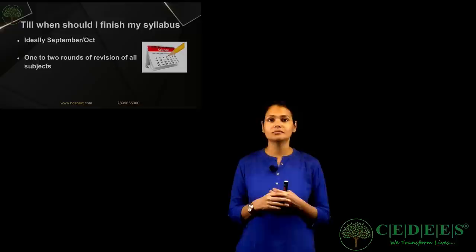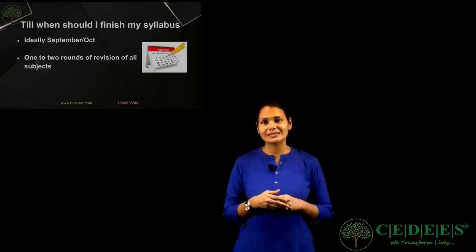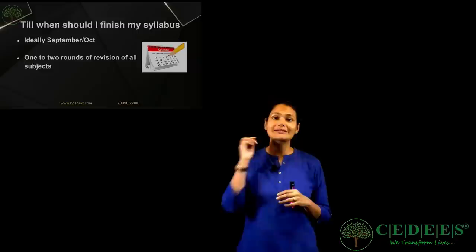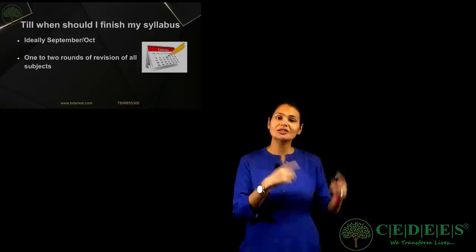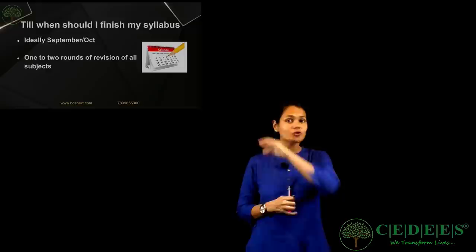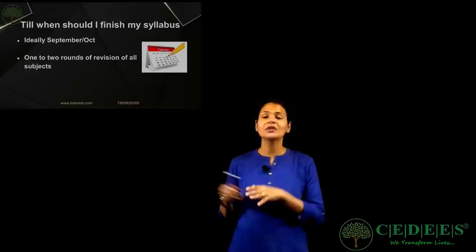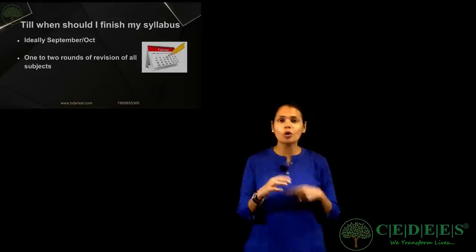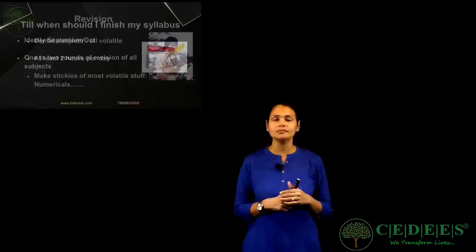Regarding when to finish your syllabus: if the exam is in December, keep a three-month buffer — October, November, December — for revision. Finish your syllabus by September. Remember, round two happens automatically during round one via simultaneous revision. So by September or October, you should have finished all subjects at least once, and done one to two rounds of revision. Then keep giving mock tests and doing previous papers all the way to the exam.